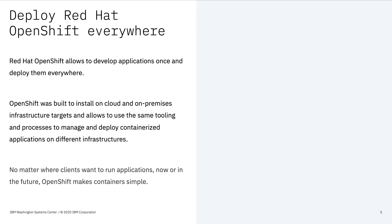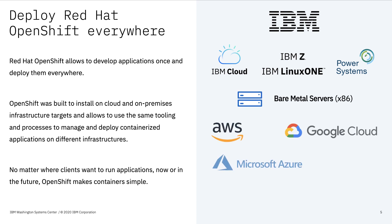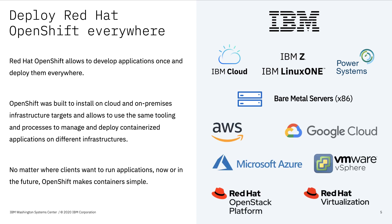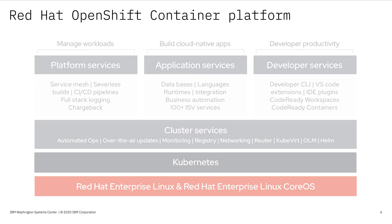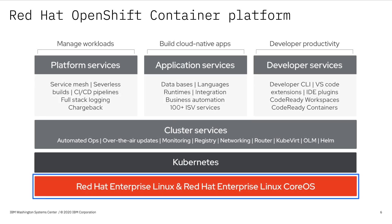Looking at this stack, OpenShift or OCP runs on all these different platforms, including public clouds like AWS, Azure, Google, and IBM Cloud. OpenShift also runs on private cloud platforms, including x86 Intel, IBM Power, and IBM Z. Moving up to the next level — the operating system — Core OS is essentially a derivation of Red Hat Enterprise Linux that was designed specifically for container workloads.